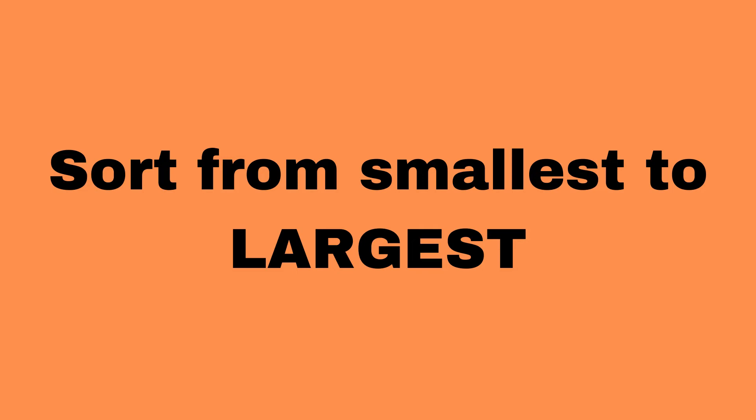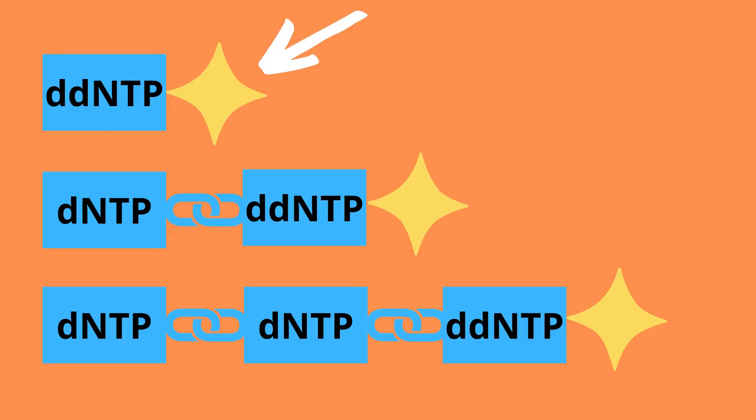Since based on the size of each piece of DNA we know the position, and based on the color of each final nucleotide — which is due to the ddNTP label — we know which specific nucleotide base it is: A, C, G, or T.